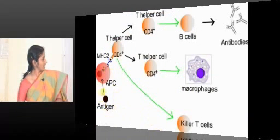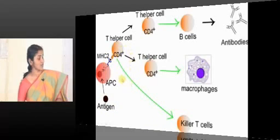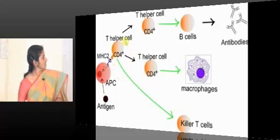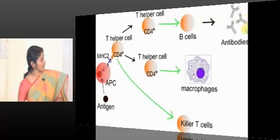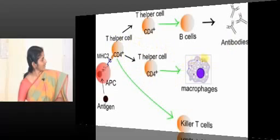Antigen is taken up by the antigen presenting cell, presented to the CD4 helper T cells. We will come to this process in detail a little later. So the CD4 helper T cell can stimulate the B cells to result in production of antibodies. The same CD4 helper T cells can result in activation of macrophages.